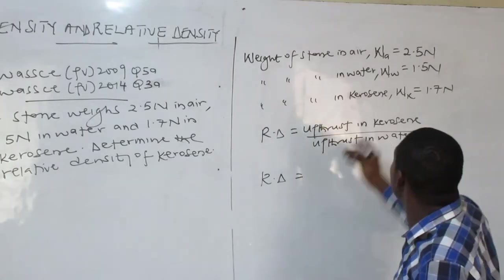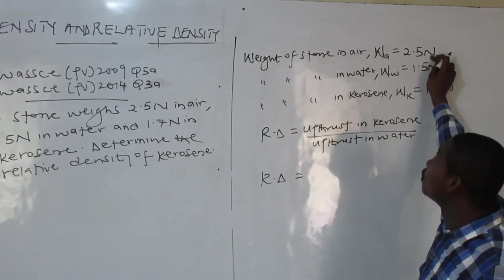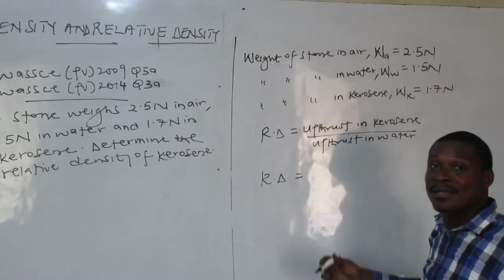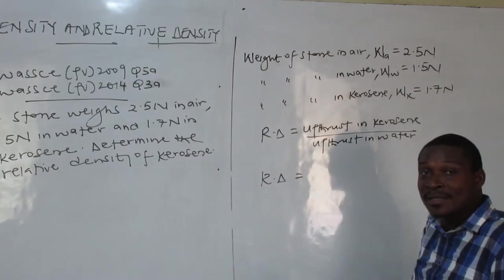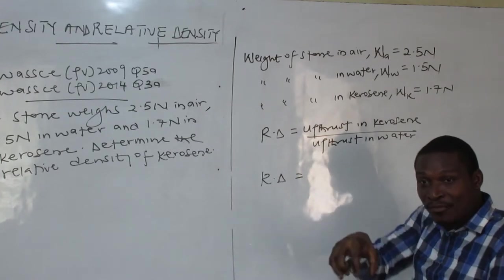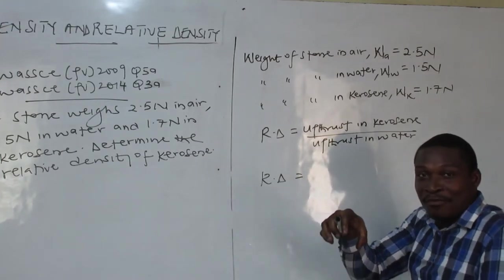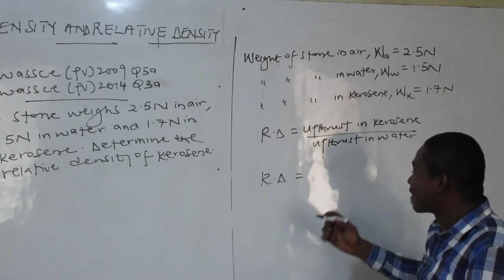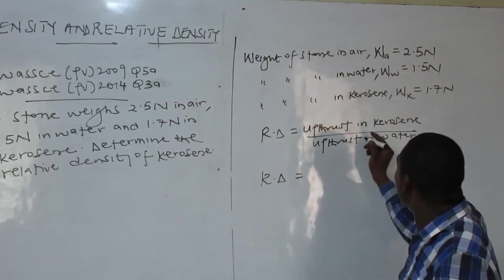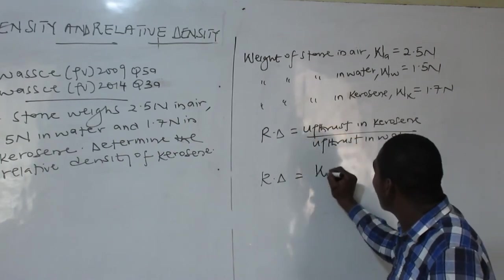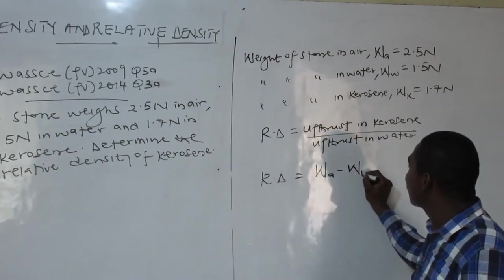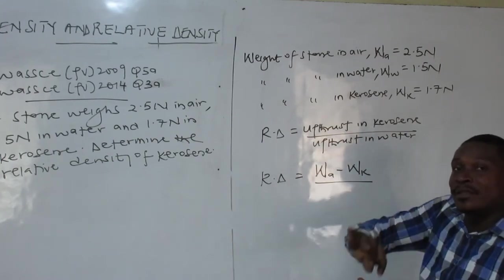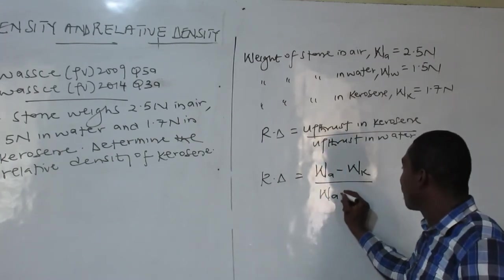Upthrust is the apparent loss in weight. The weight in air is 2.5; you put the stone in water and you get 1.5, so part of the weight is missing — the water is holding that part. That missing part is the upthrust; that is why you feel 1.5 in water and not the actual 2.5. So upthrust in kerosene = weight in air minus weight in kerosene; upthrust in water = weight in air minus weight in water.